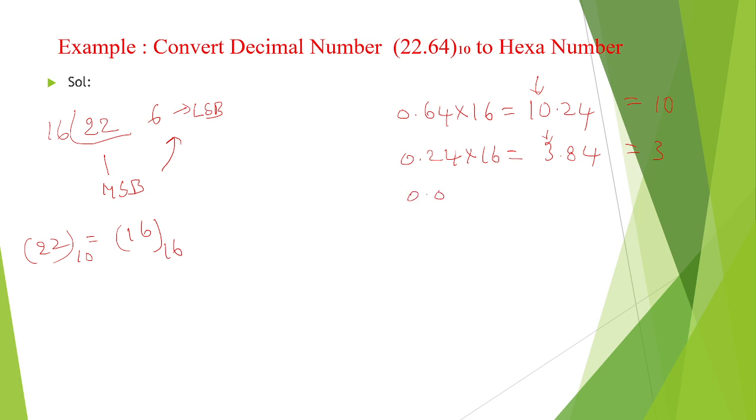And the resultant multiplication factor is 0.84 multiplied with 16, is equal to 13.44. So carry is 13. So take it outside, 13 means it is D.